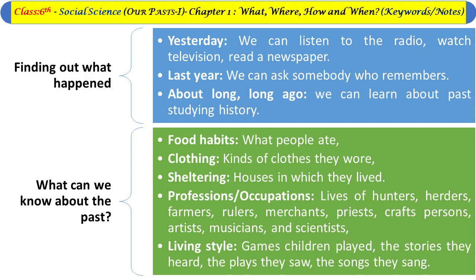The second topic is what we can know about the past. We know about ancient people's food habits — what people ate; clothing — the kinds of clothes they wore; sheltering — the houses in which they lived; professions or occupations — the lives of hunters, herders, farmers, rulers, merchants, priests, craftspersons, artists, musicians, and scientists; and living style — games children played, stories they heard, plays they saw, and songs they sang.